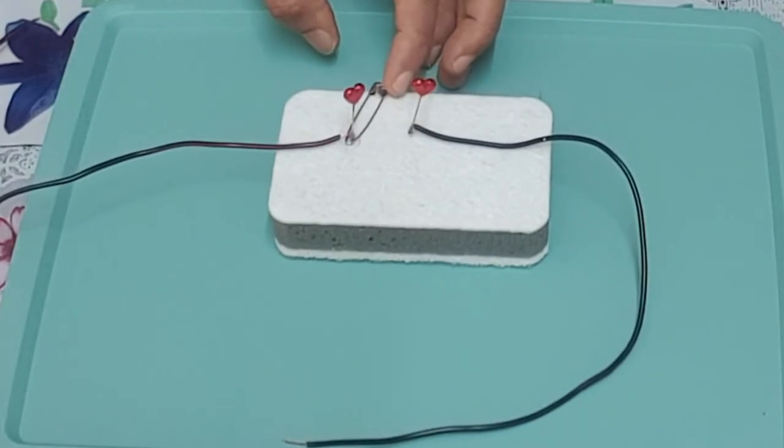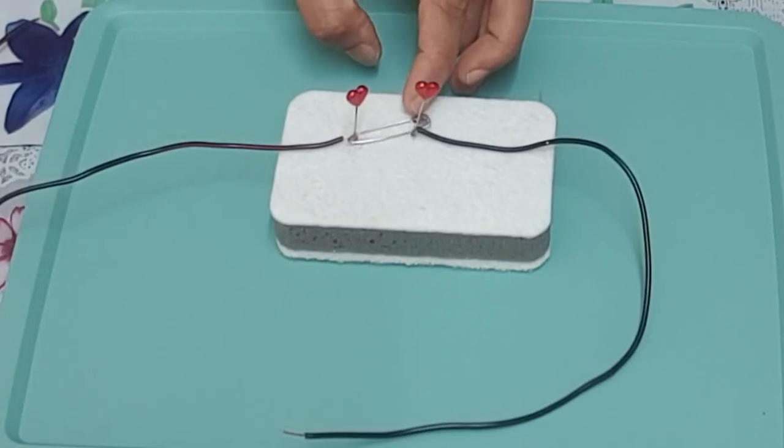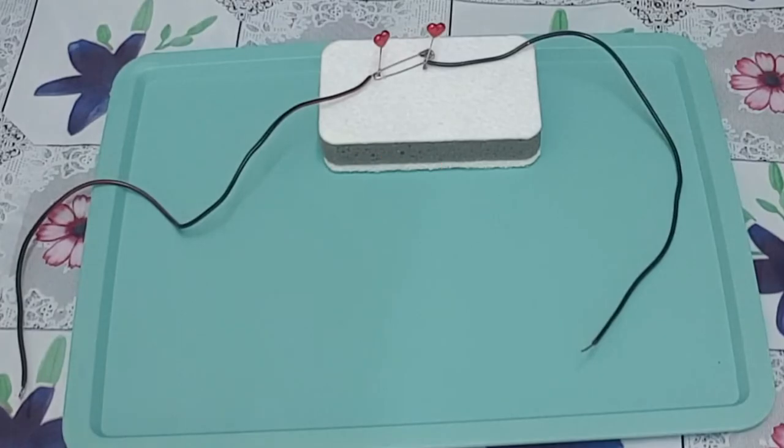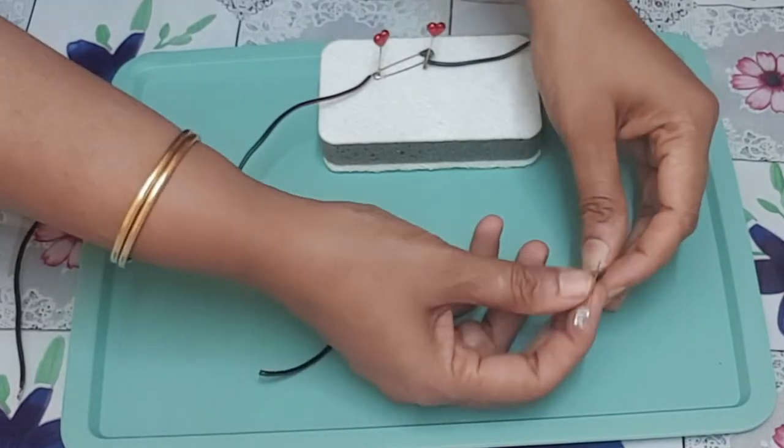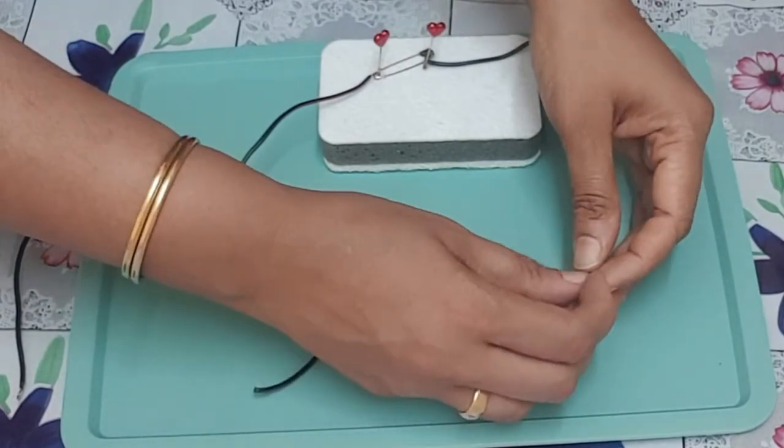This will be your switch for this activity. Now make a circuit by connecting an electric cell and a bulb with this switch.